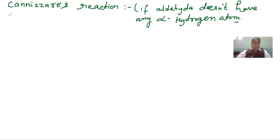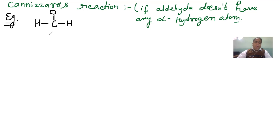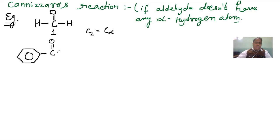For example, methanal and benzaldehyde do not have any alpha hydrogen atom. In benzaldehyde, there is no beta carbon, so there is no beta hydrogen atom. Carbon number 1 is not called alpha; carbon number 2 (C2) is called the alpha carbon atom. In benzaldehyde, the alpha carbon is flanked by two more carbon atoms but has no hydrogen atom — no alpha hydrogen atom at all.